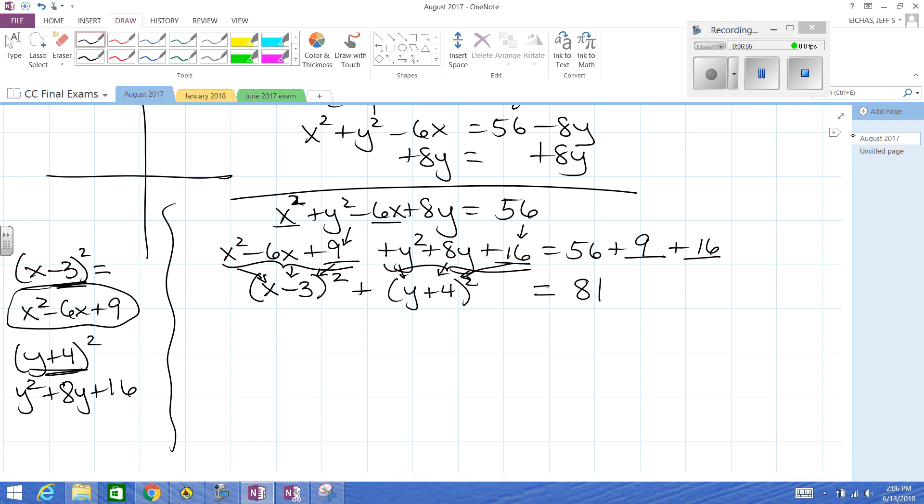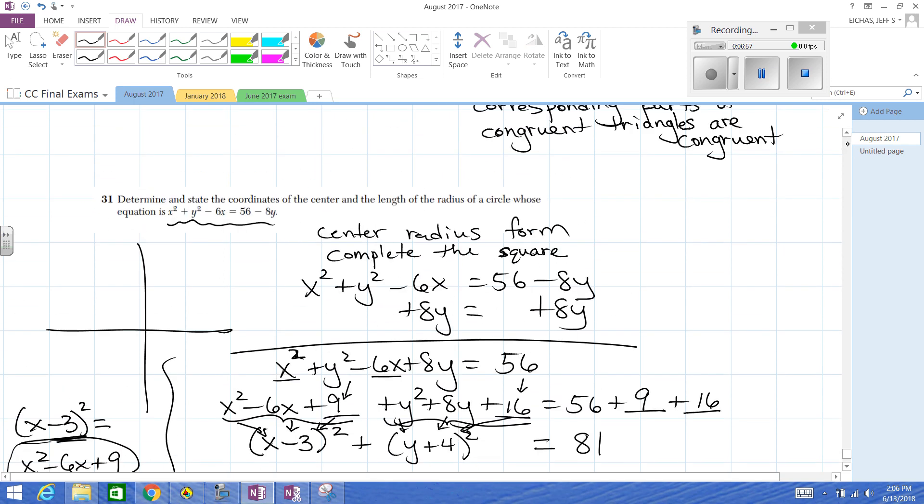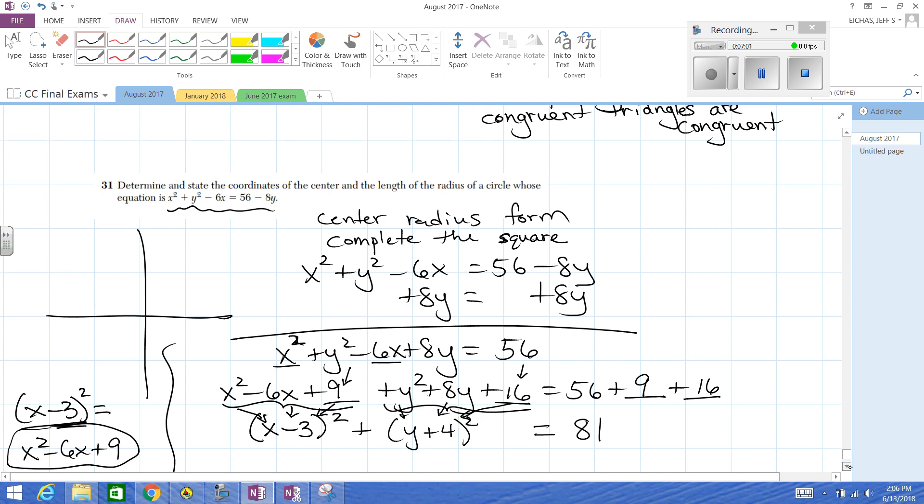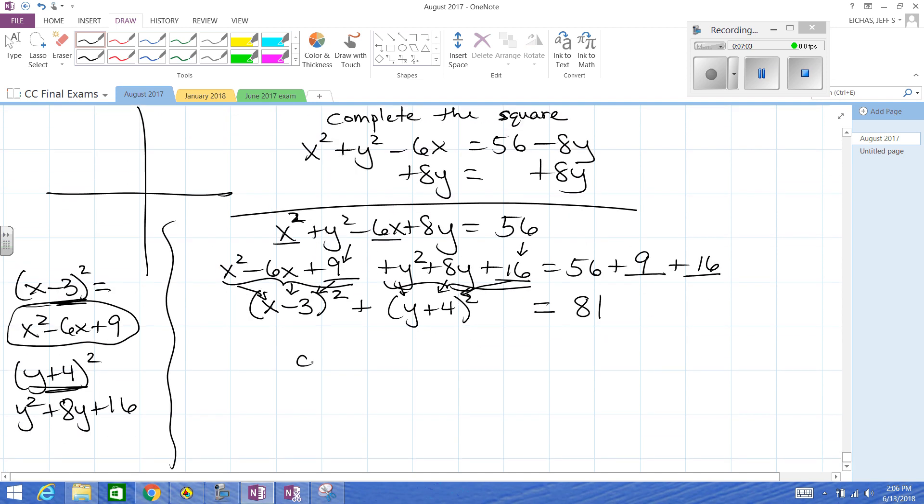So now, what is it asking for? Determine and state the coordinates of the center and the length of the radius. The center where I teach students is that it's the same number but the opposite sign when it's in this setup. So, 3 negative 4 for the center. The radius is always the square root of whatever's over there if we're in center radius form. So, the radius is 9. Here's our answer for two points.